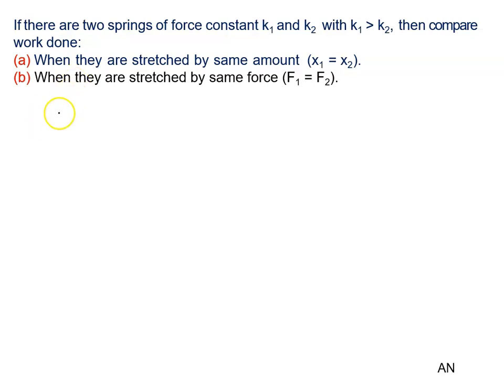If there are two springs of force constant k1 and k2 with k1 greater than k2, then compare the work done when they are stressed by same amount (x1 equals x2), and when they are stressed by same force (F1 equals F2). We all know work done is given by half k x square in the case of the spring.